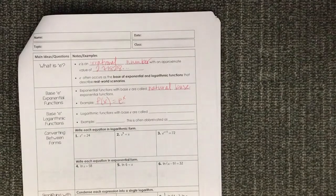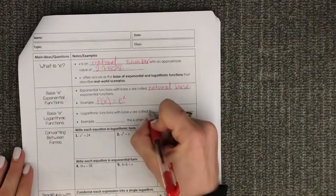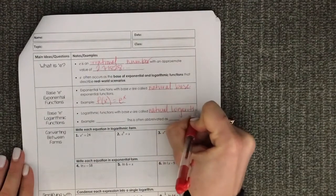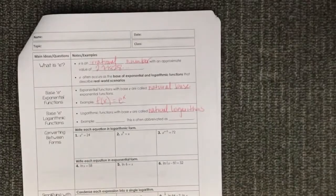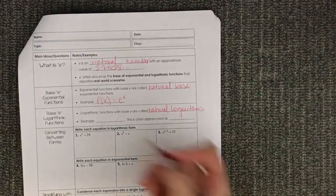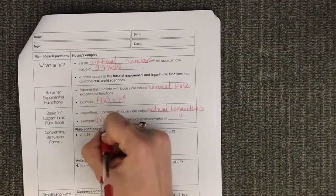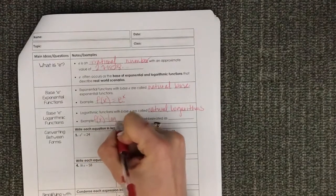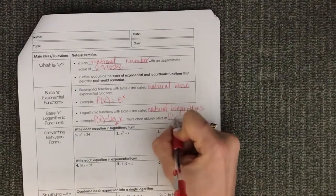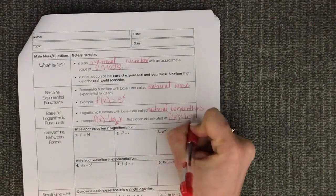Logarithmic functions with base E are called natural logarithms, and that's abbreviated LN. So f of x being equal to log base E of x is often abbreviated as f of x equals LN x.